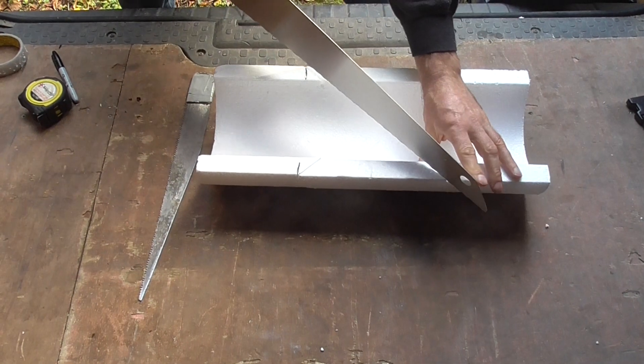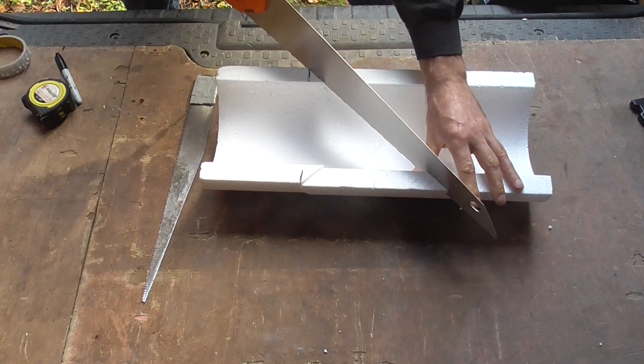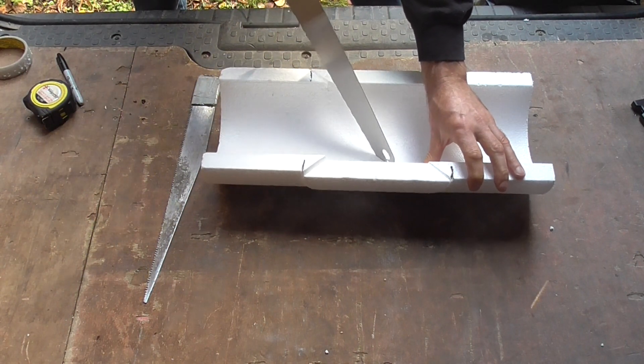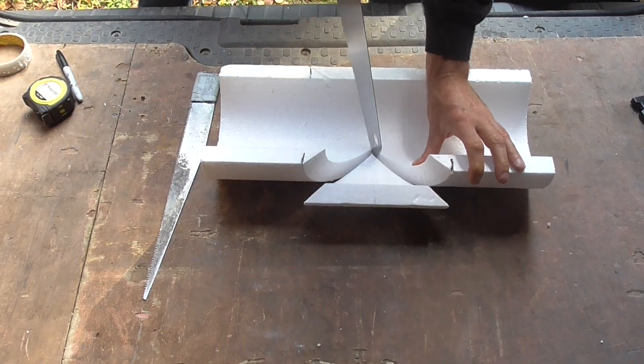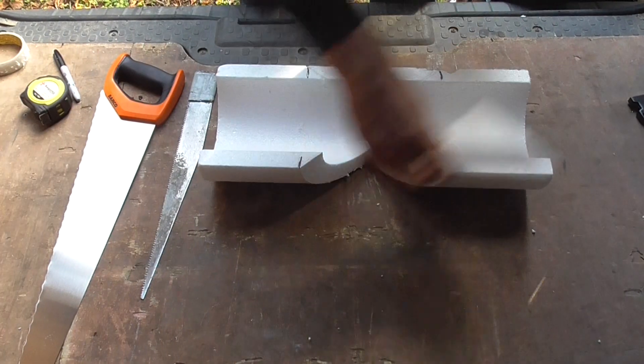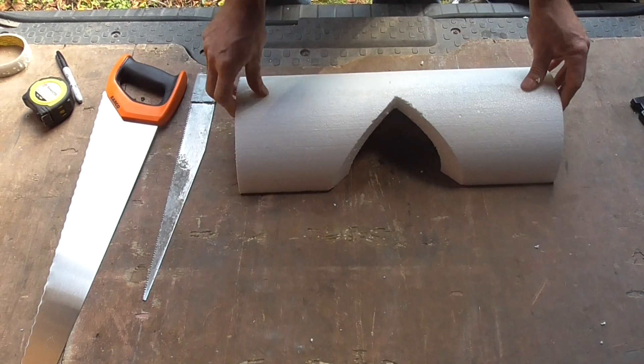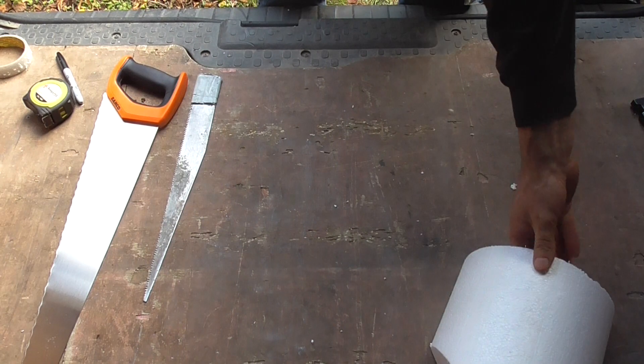And then we go back through this side. There we go, remove that piece, move that out of the way. So that's constructed our body for our T. We'll just put that out of the way.